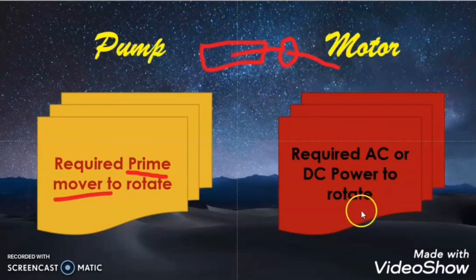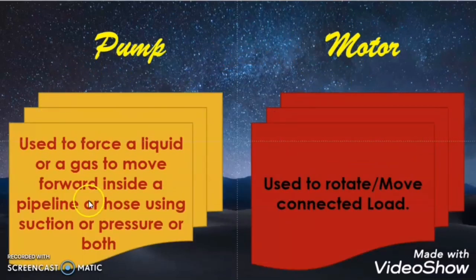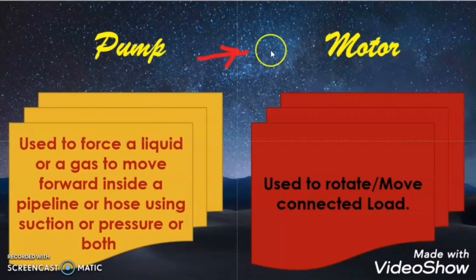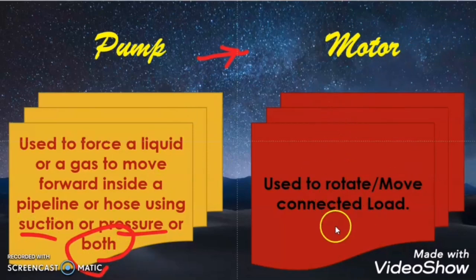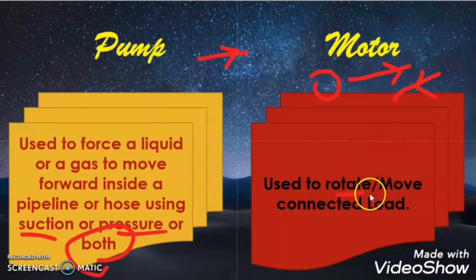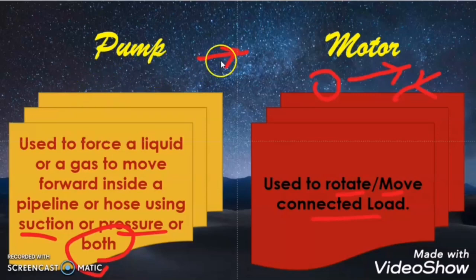But the motor requires a power supply to rotate. Another difference between pump and motor is that a pump is used to force liquids and gases to move forward inside a pipeline or hose line by using suction, pressure, or both. But a motor is used to rotate the connected load either in rotation or in the forward or backward direction. The pump is used to move fluids — oil, water, or gas — by using suction, pressure, or both in a pipeline.